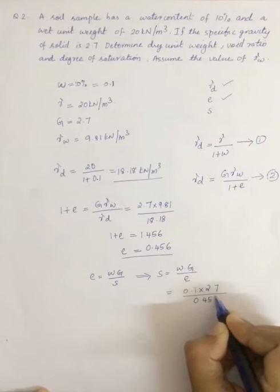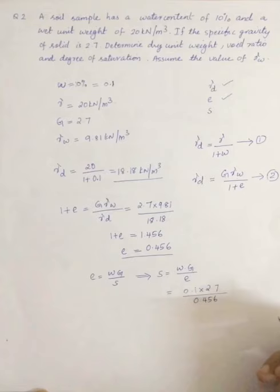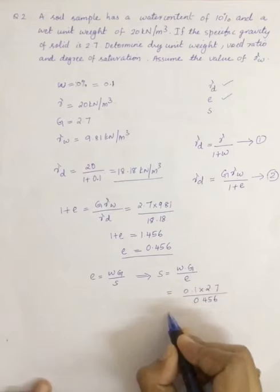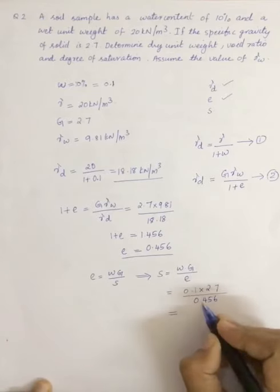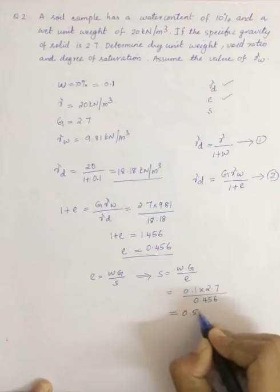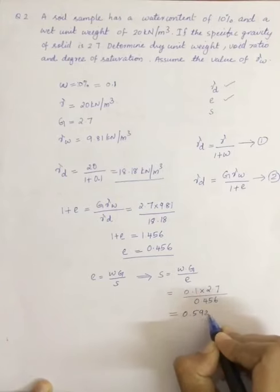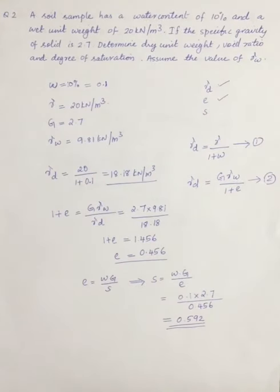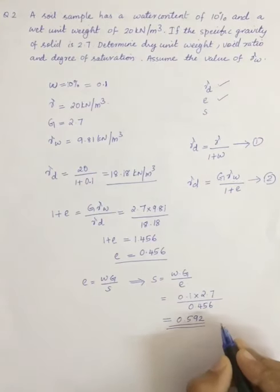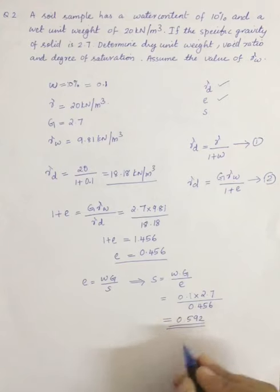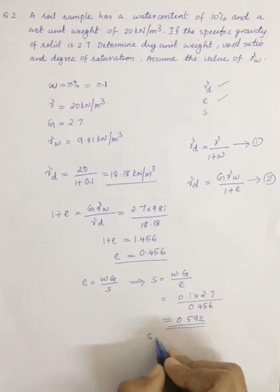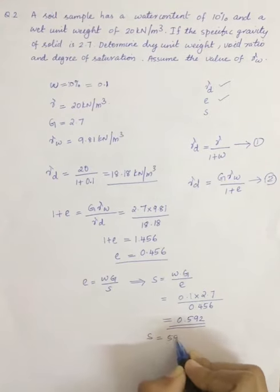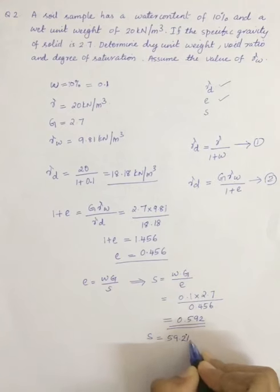When we substitute 0.1 into 2.7 divided by 0.456, you will get the degree of saturation as 0.592. The degree of saturation is normally expressed as percentage, so you can express S as 59.2 percentage.